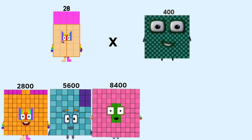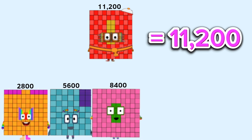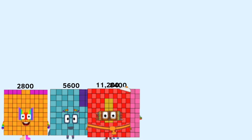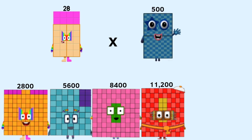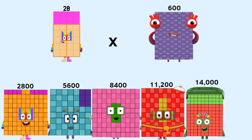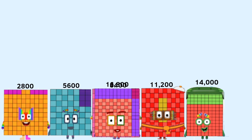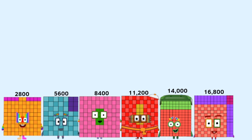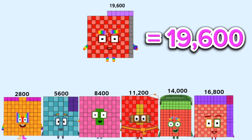28 times 400 equals 11,200. 28 times 500 equals 14,000. 28 times 600 equals 16,800.